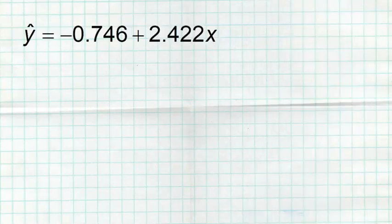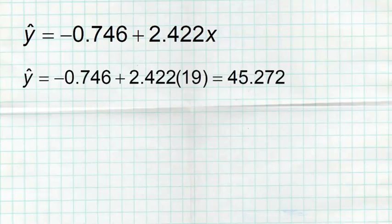So the model is: ŷ = -0.746 + 2.422x. The little hat on top of the y — pronounced 'y-hat' — emphasizes that it's a predicted y. No one is saying this model will make perfect estimates; it's just meant to make predictions. X is the age in months of the Dalmatians and y is the predicted weight. For example, for a 19-month-old Dalmatian: plugging in 19, we predict the dog weighs 45.272 pounds.